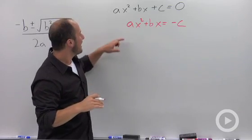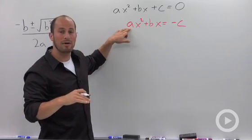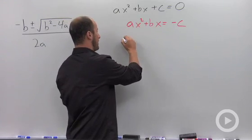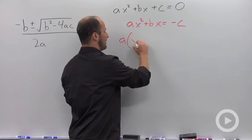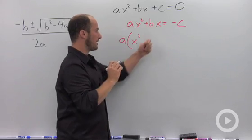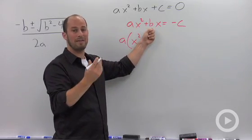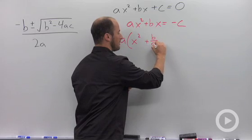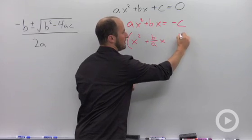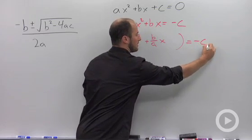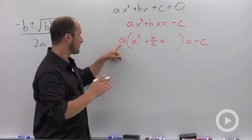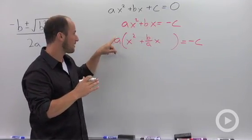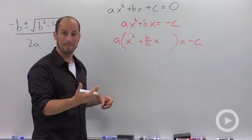So we then factored out the coefficient on our leading term. So that means we take out the a. This becomes x squared. When we take out an a from bx, this is just going to be left with b over a times x, and then equals negative c. You can always check this because when you multiply that a back through, we should end up with b. Here, a and our a cancels, leaving us with b.